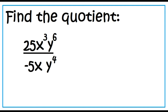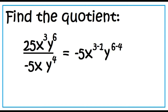Find the quotient: 25x cubed y to the power of 6 divided by negative 5xy to the power of 4. This is equal to negative 5x to the 3 minus 1, y to the 6 minus 4. The final answer is negative 5x squared y squared.